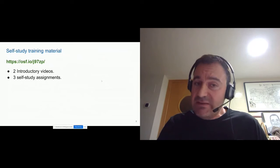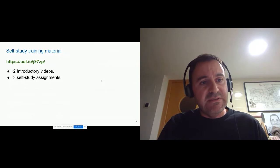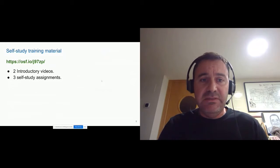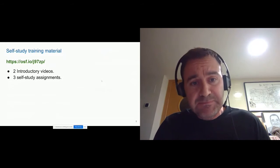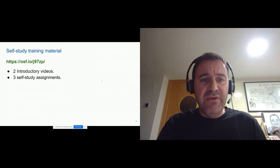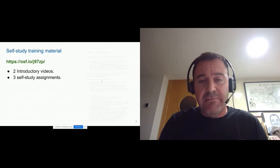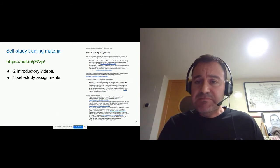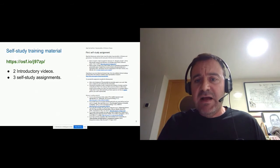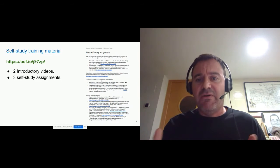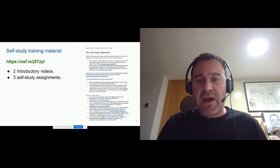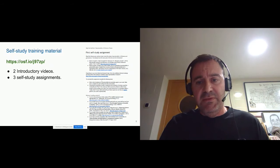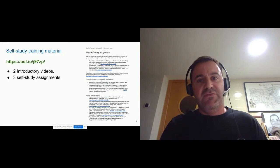Regarding the self-study training material, all of them are publicly available on the Open Science Framework (OSF) website. We developed a couple of videos to introduce the experiment activity and the basic concepts about reproducibility. We also developed three different one-page assignments — visible on the right-hand side of the slides — basically providing some basic readings and proposing short questions for reflection based on these readings. We also provided some optional additional readings for students who want to go deeper into the different aspects proposed in the assignments.